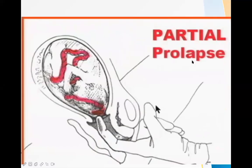This is a partial prolapse. The cord is not present in the vagina. This shows a per-vaginal examination where the examiner is feeling the presence of the umbilical cord in the dilated cervical os — this is the partial prolapse.